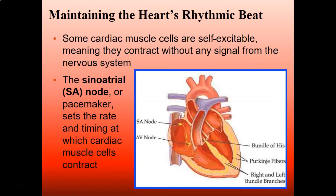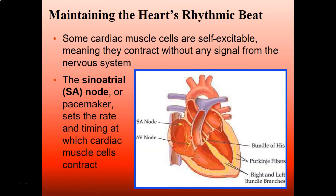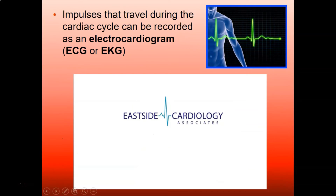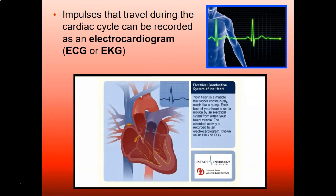Now let's talk about the heartbeat and electrical signals. Some cardiac muscle cells are self-excitable, meaning they contract without a direct signal from the nervous system. The sinoatrial node, or SA node, is the pacemaker of the heart — it sets the rate and timing at which the heart contracts. It is located at the top of the right atrium. At the bottom there is also the atrioventricular node, or AV node.